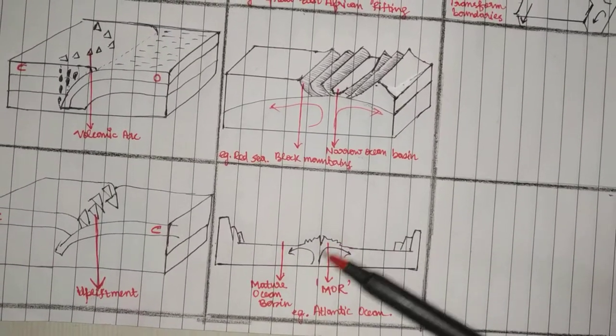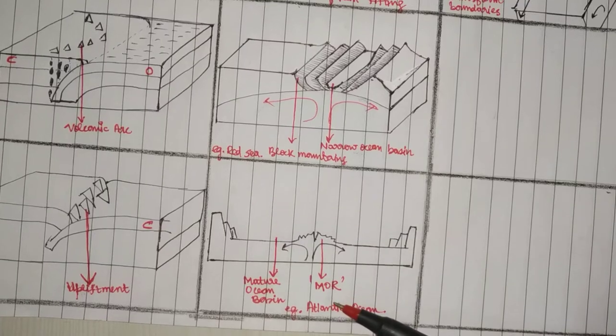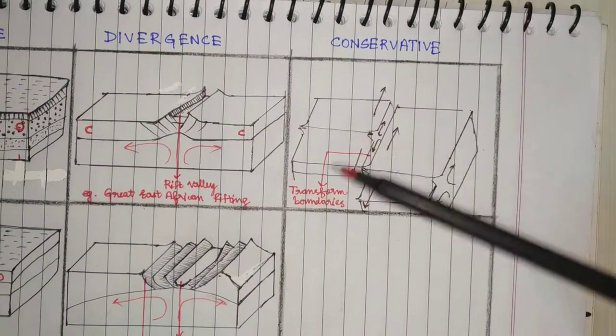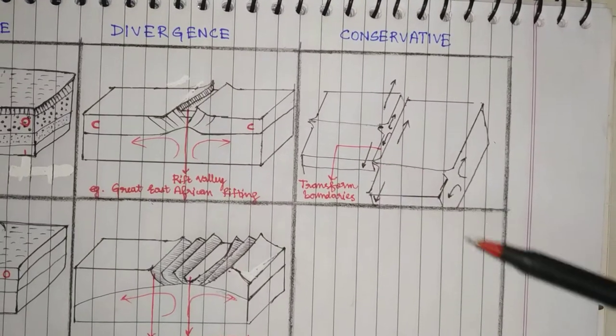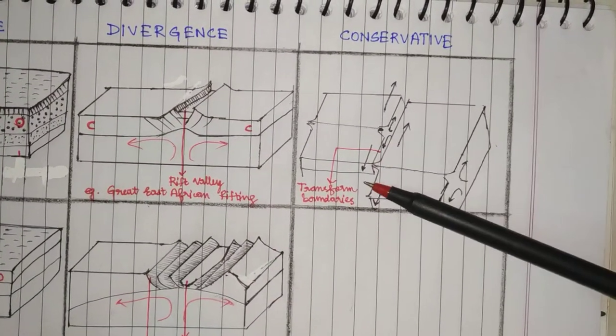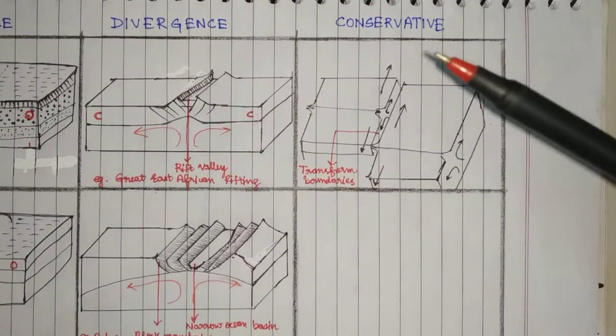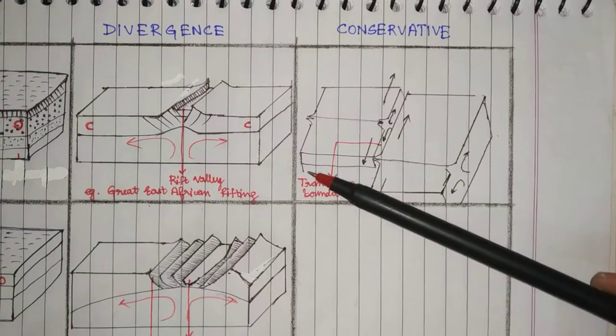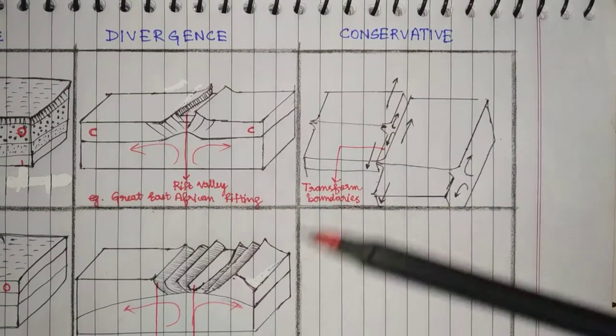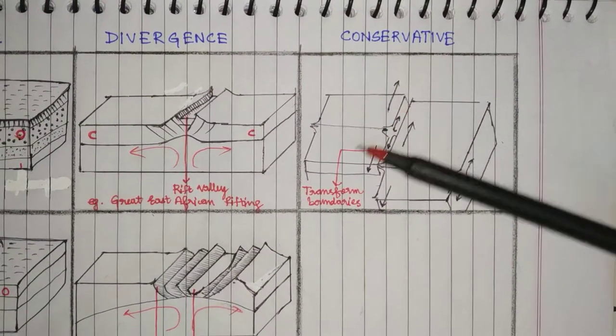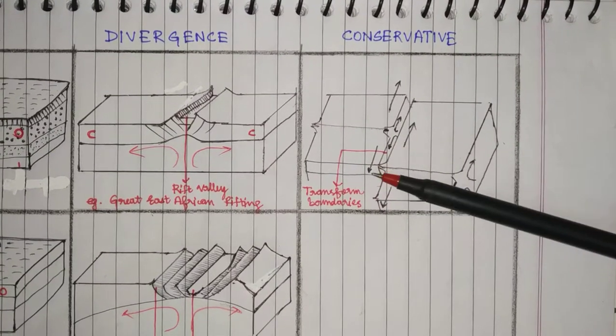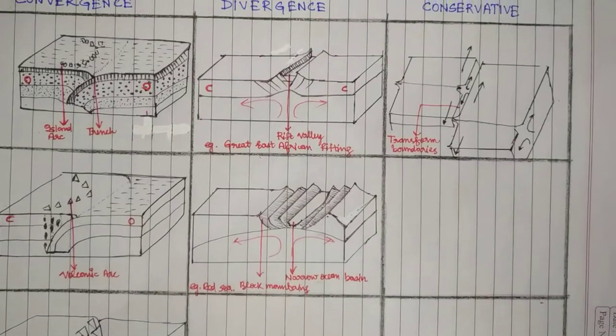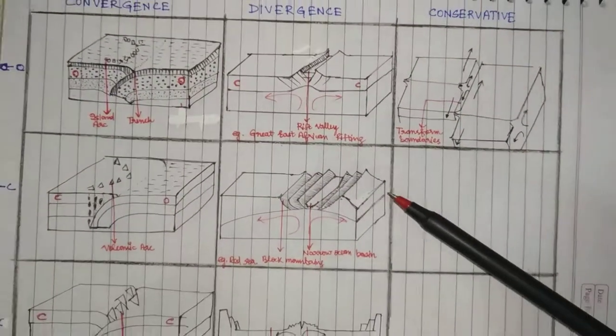Finally, the conservative boundary where the boundaries don't directly - there is no head-on collision or head-on separation, rather there are transform boundaries because they are just frictioning. Example: San Andreas fault. I will dwell deep into all of these.